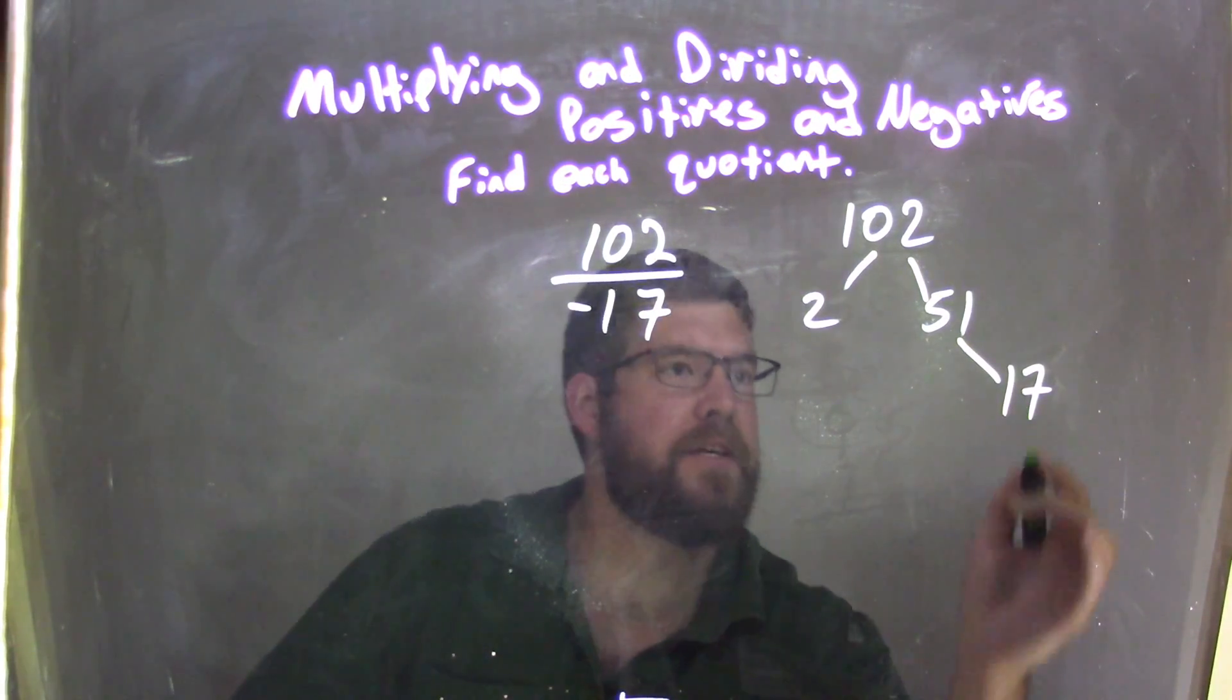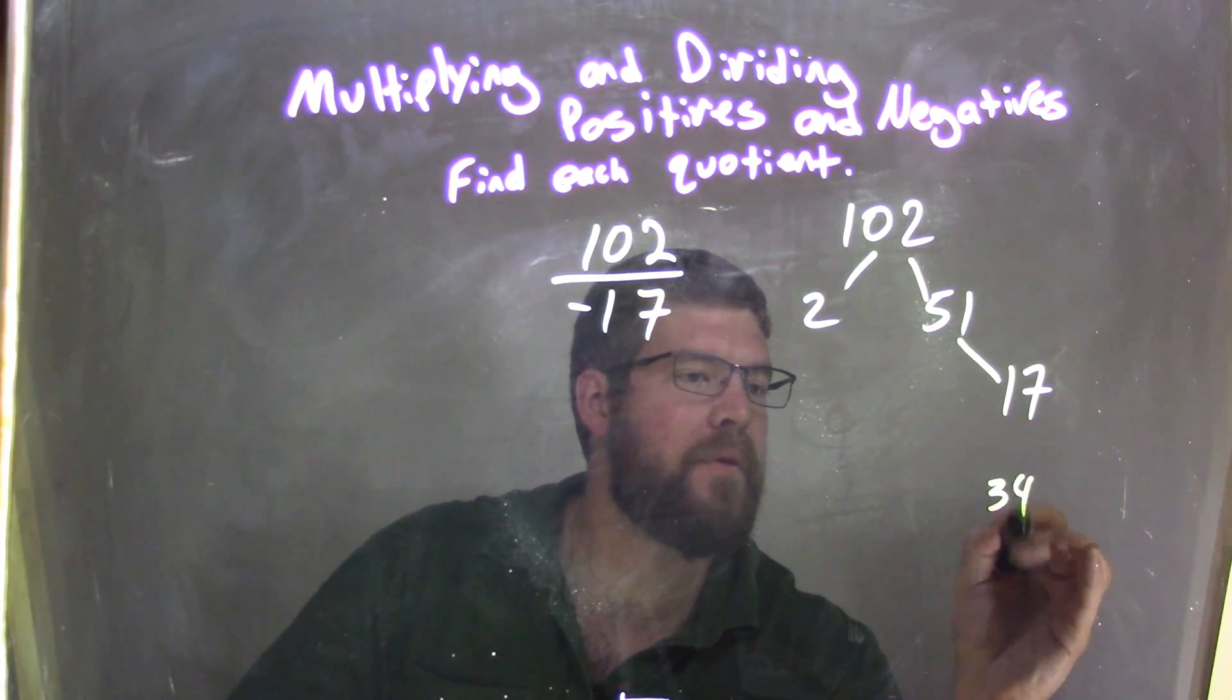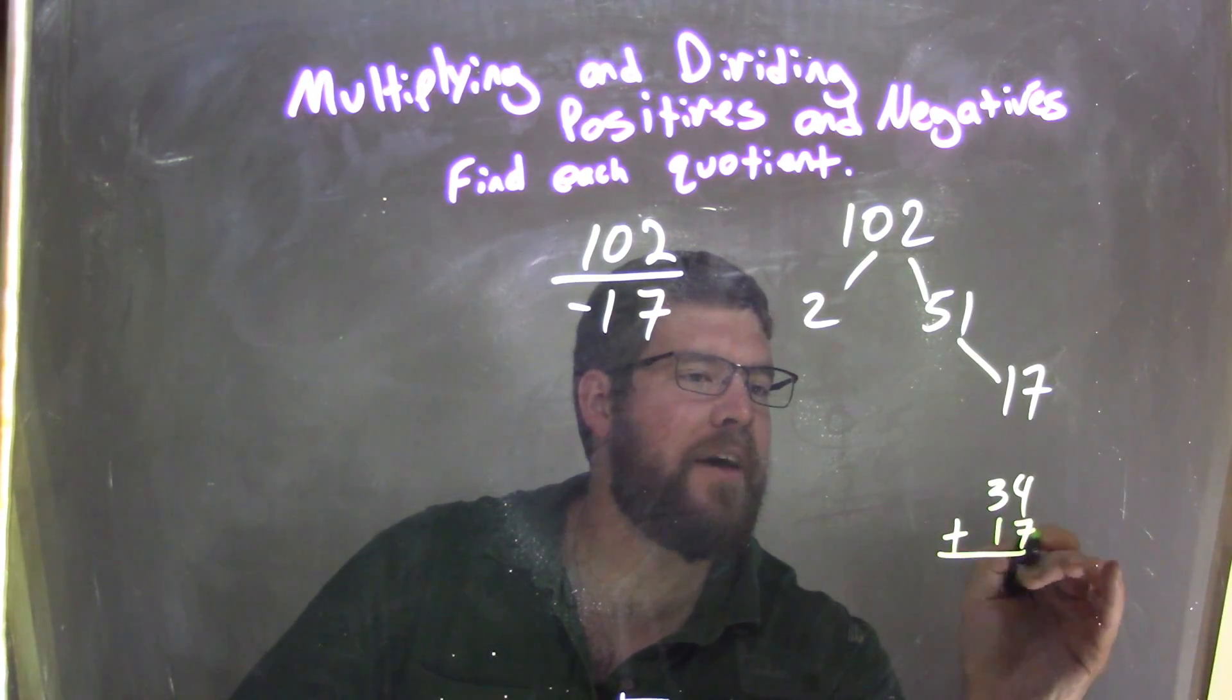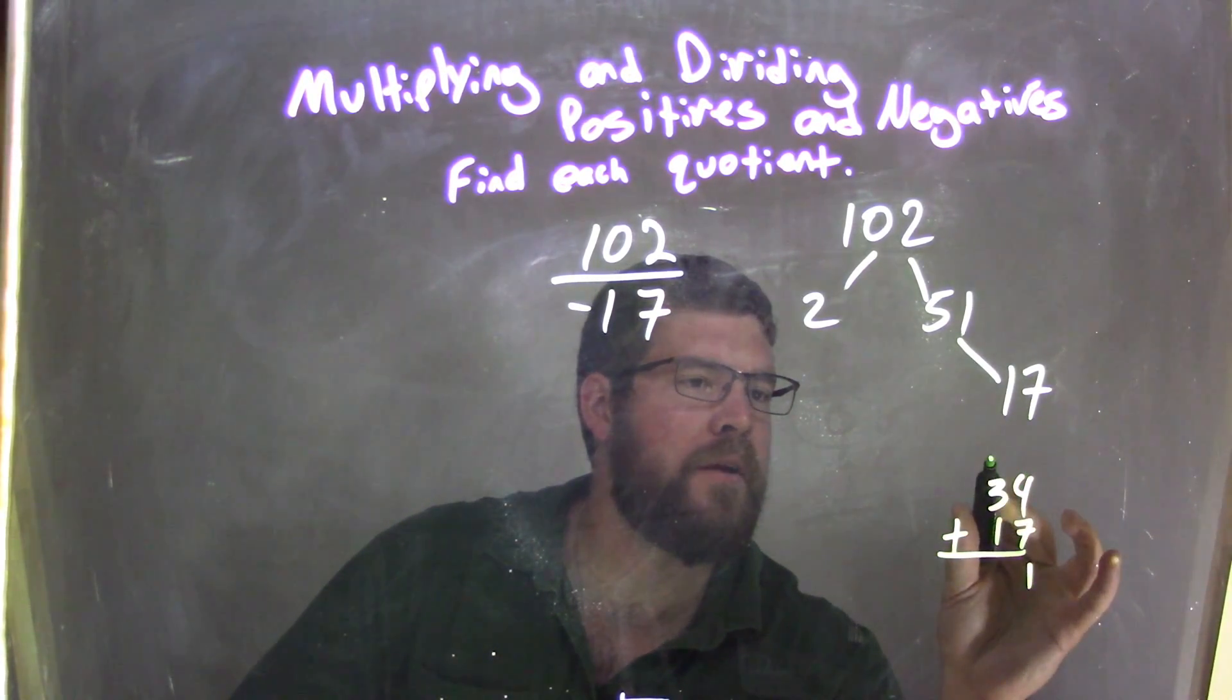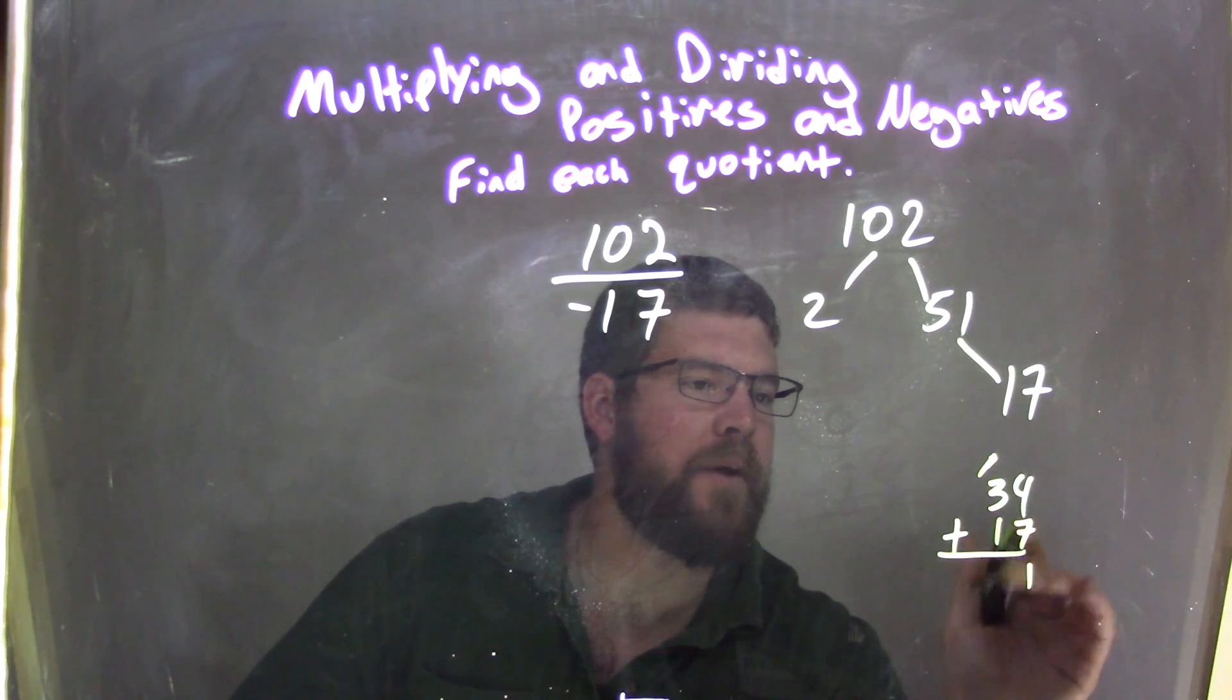Plus another 17, so if we have 17 times 2 is 34, and we add another 17 to that, 4, 1, carry 1, 1 right there, and we get 51.